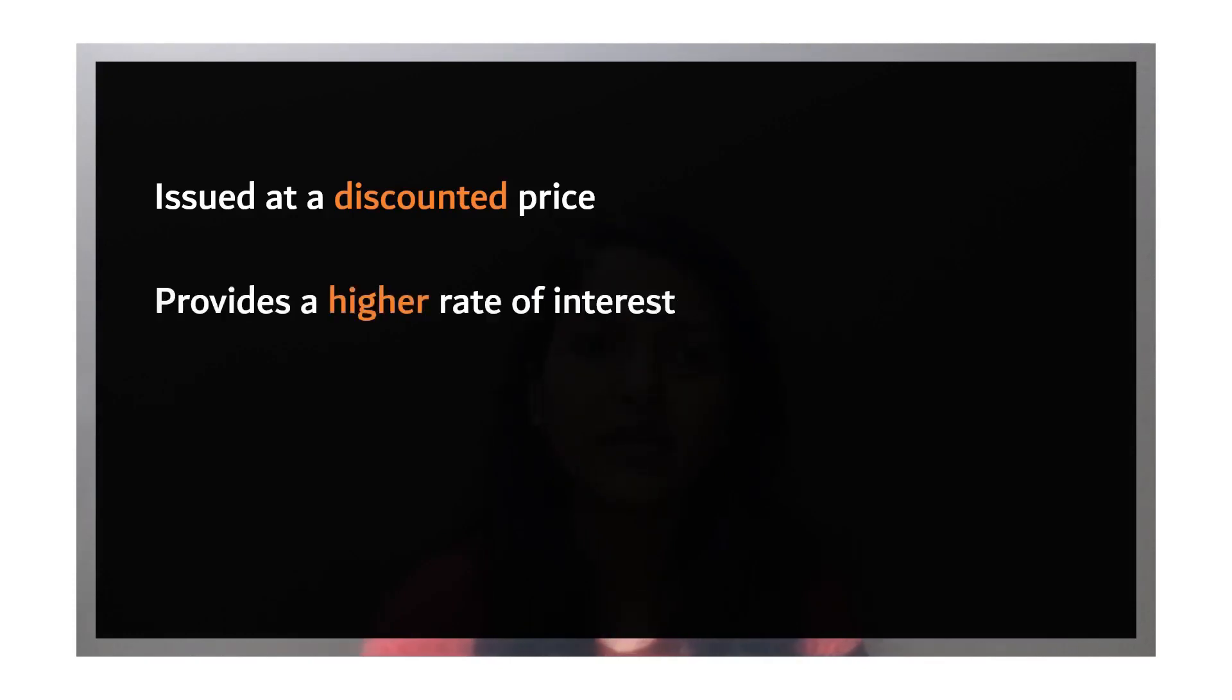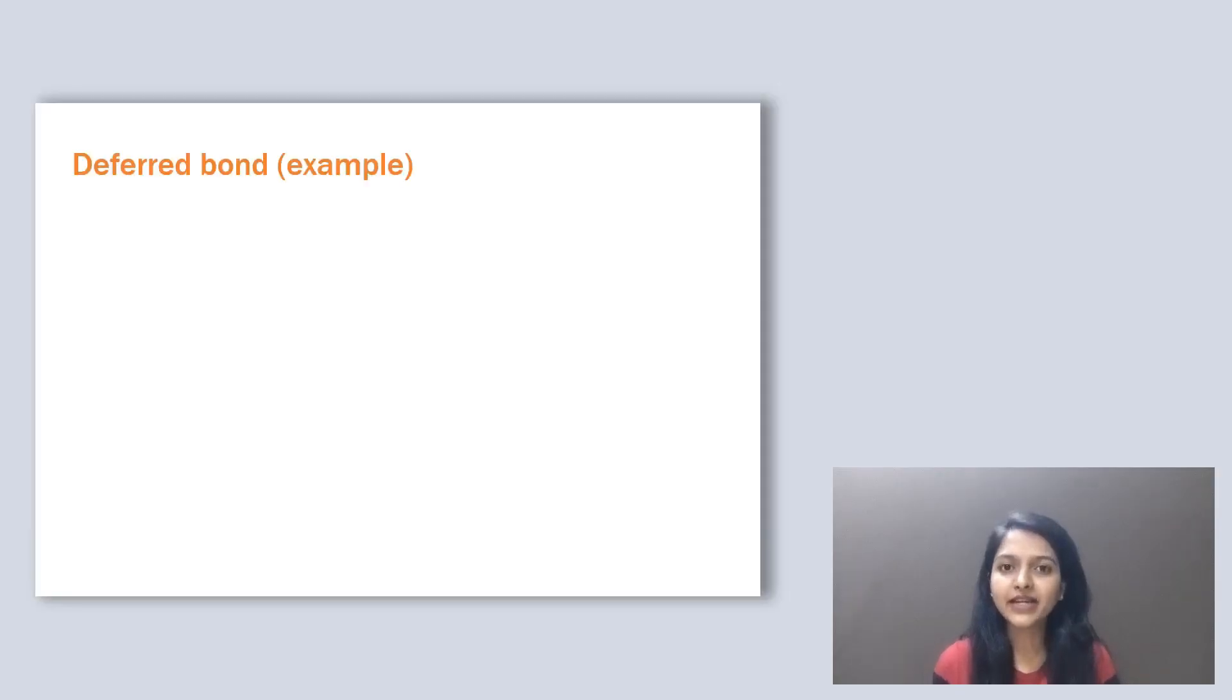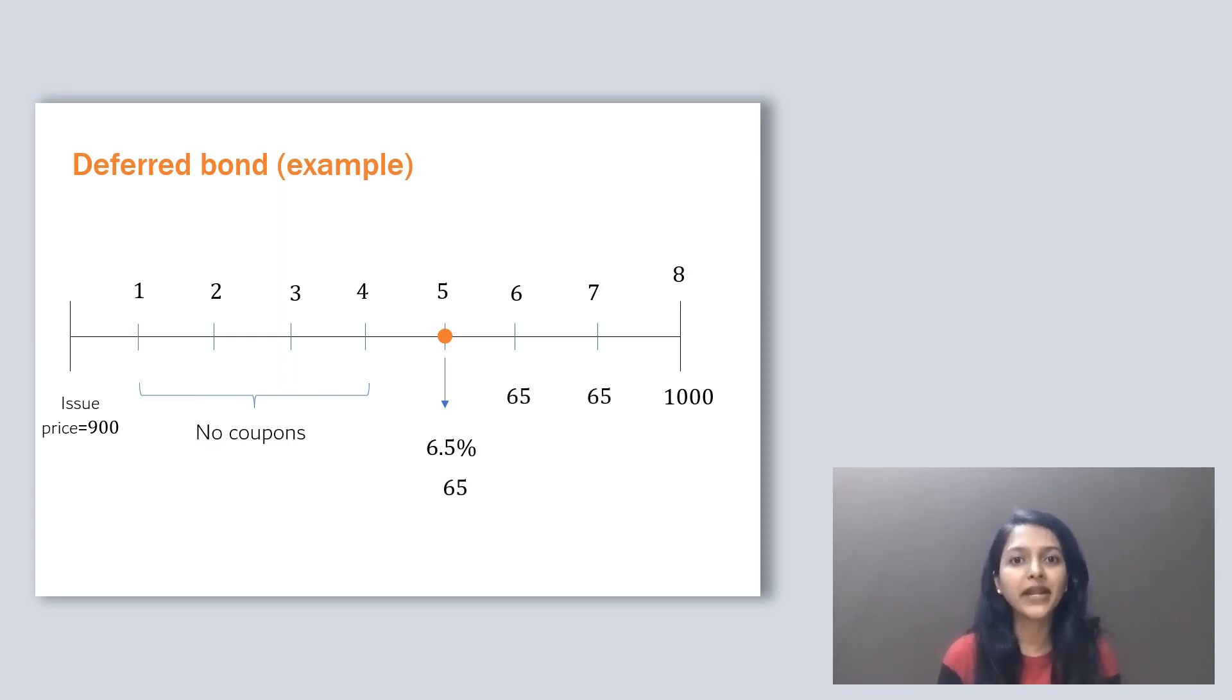Suppose an 8-year deferred coupon bond having a face value of 1000 is issued at 900. They may start paying coupons from the 5th year onwards at the rate of let's say 6.5%. That means no coupons for the first 4 years. From the 5th year onwards, coupon amount of Rs. 65 is paid annually for the remaining 4 years.